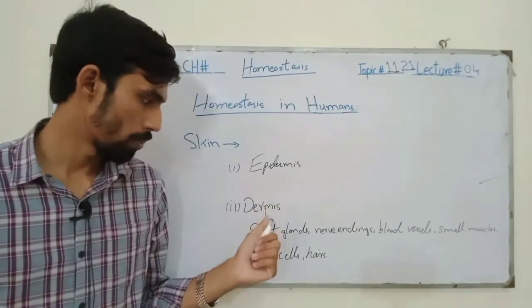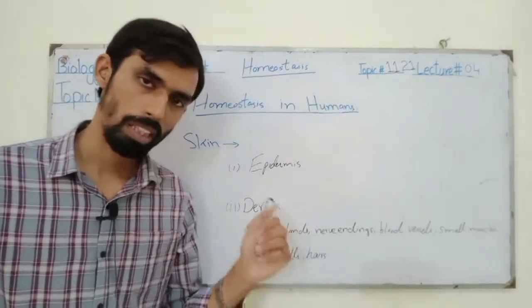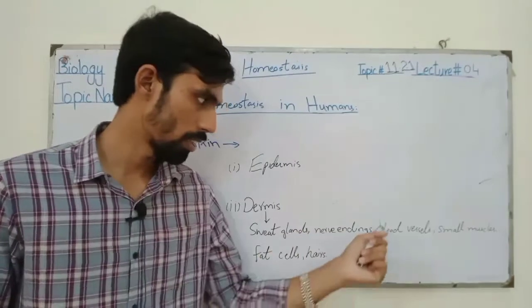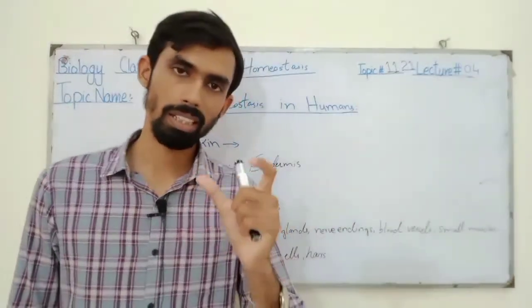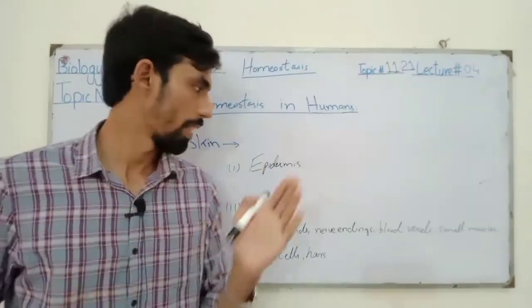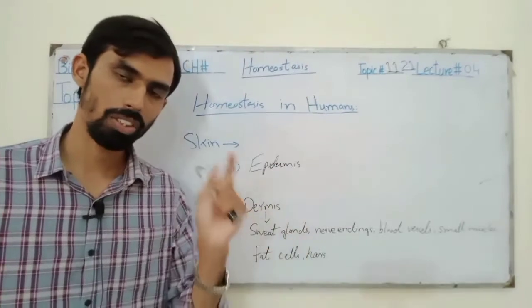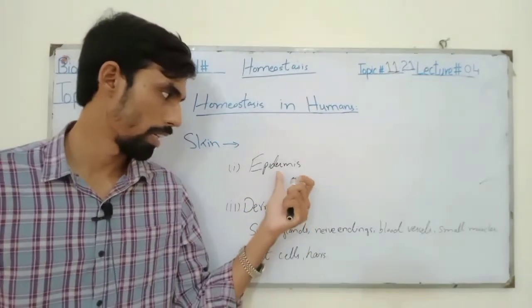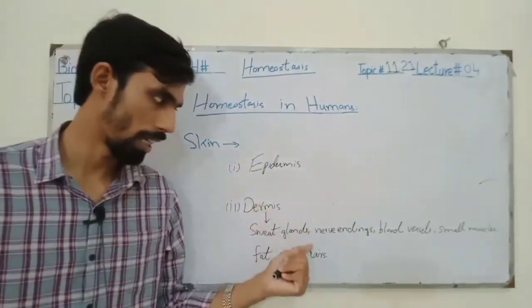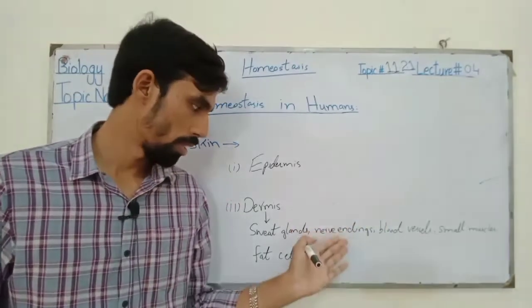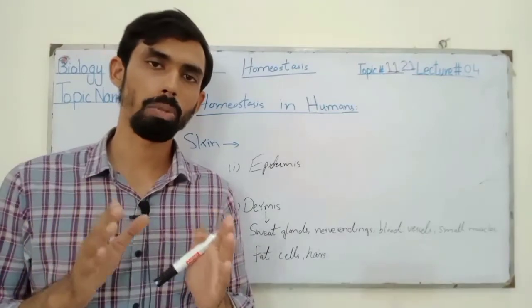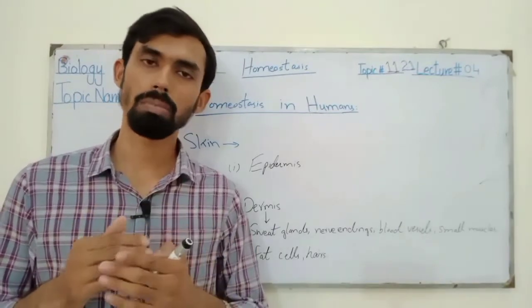There are fat cells in the dermis which work for insulation from the outer environment, whether it is hot or cold. These are sweat glands which work in the dermis. Nerve endings, blood vessels, small muscles in dermis, fat cells and hairs are attached to dermis. The main function of fat cells is that they work as insulation to protect from the outer environment.